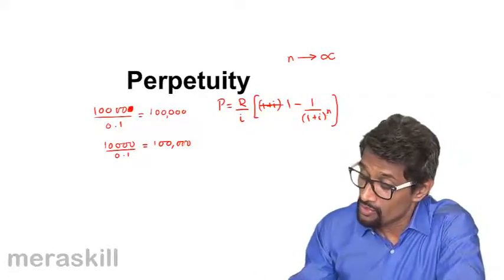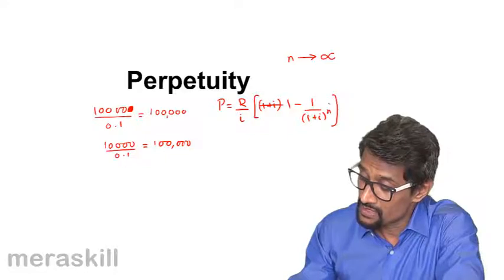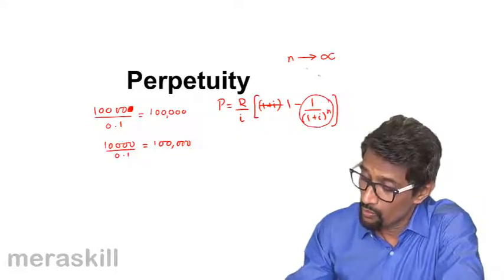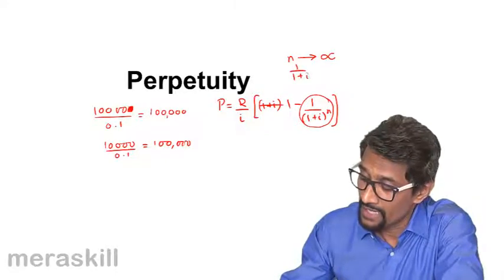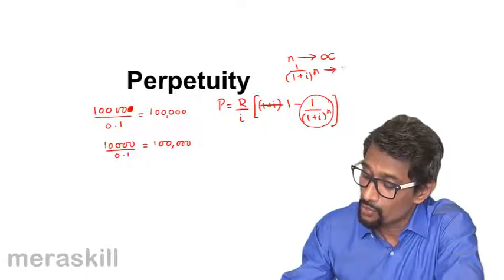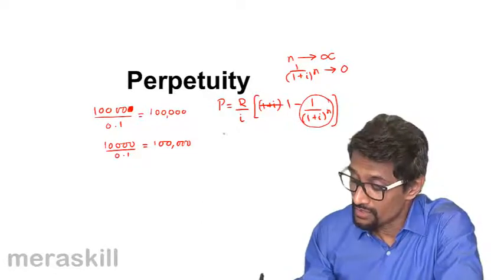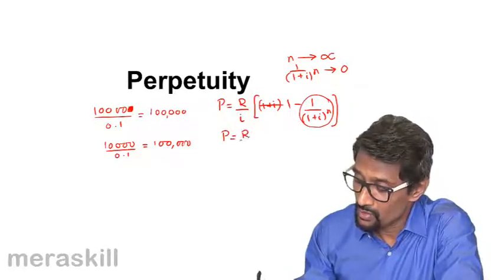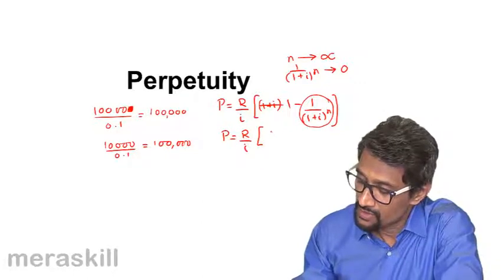case, if n is approaching infinity, this whole thing—1 upon (1+I) raise to n—will approach 0. So in that case, P is equal to R by I; it will just become 1 minus 0, or approximately R upon I. So whatever is the amount